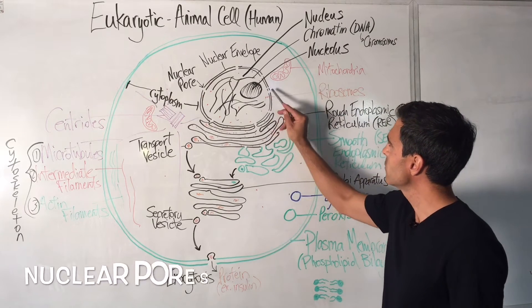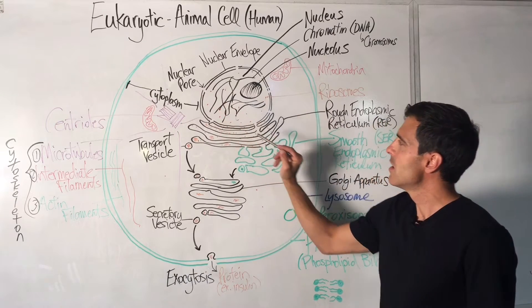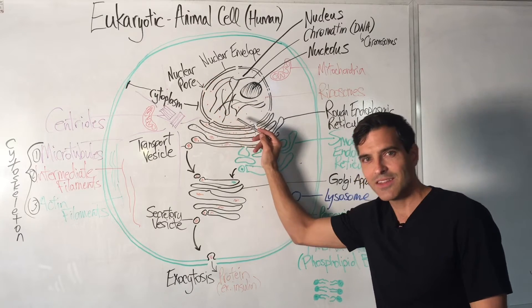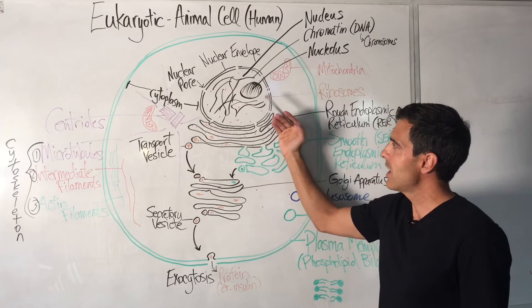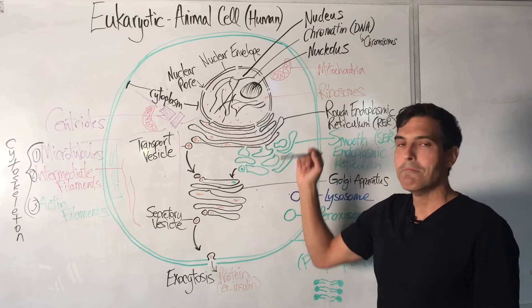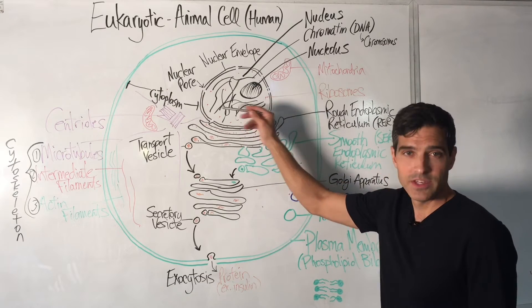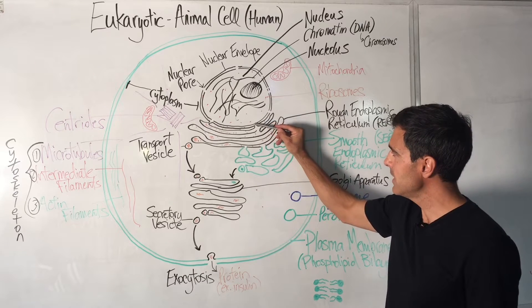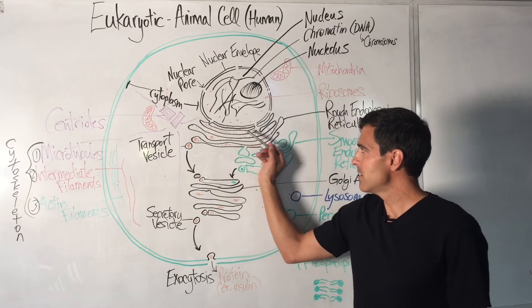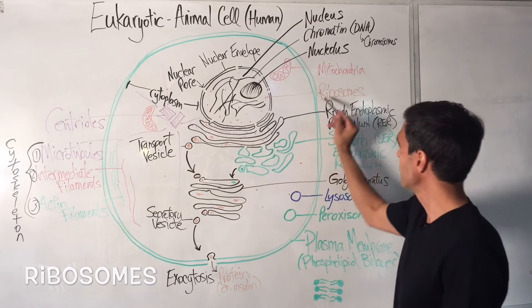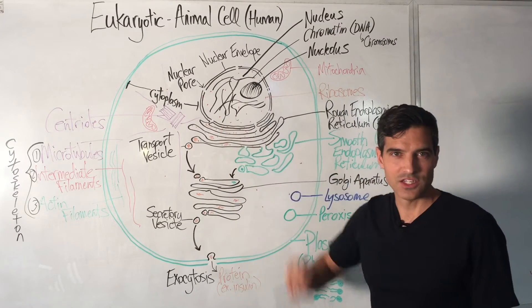The nuclear pores you can see right here, those are used to bring nucleic acids inside the cell, as well as exporting messenger RNA, which is made from the DNA. The messenger RNA will leave the nuclear pore and link up with one of these ribosomes. Those are all those little orange dots that you see there.